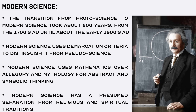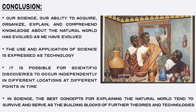Conclusion. In conclusion, information and knowledge about the natural world is the most vital resource, and our science — our ability to acquire, organize, explain, and comprehend the natural world — has evolved as we have evolved, and has been essential to our survival. The purpose of knowledge and information, the purpose of science, is to use and apply it, and this use and application of science is expressed as technology.